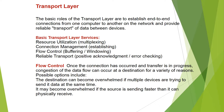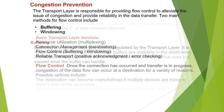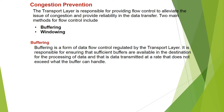Once a connection has occurred and transfer is in progress, congestion of the data flow can occur at a destination for a variety of reasons. For example, the destination can become overwhelmed if multiple devices are sending data at the same time, or if the source is sending faster than the destination can physically receive. The Transport layer is responsible for providing flow control to alleviate congestion and ensure reliability in data transfer. Two main methods are buffering and windowing.